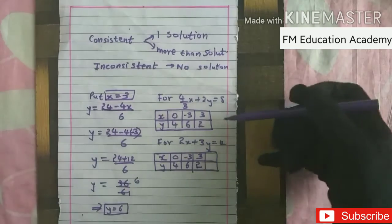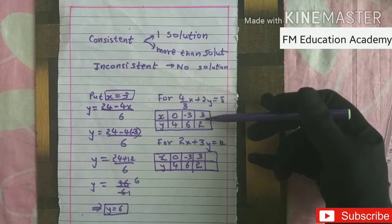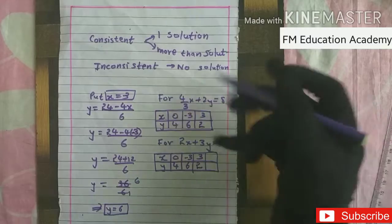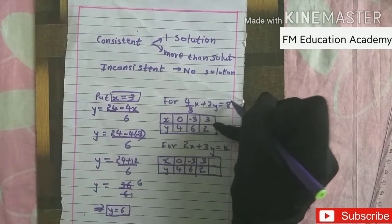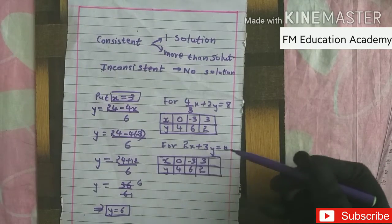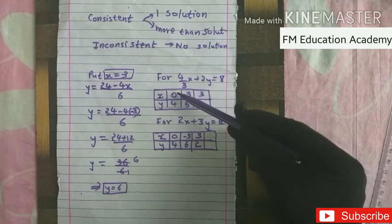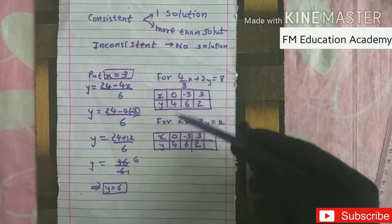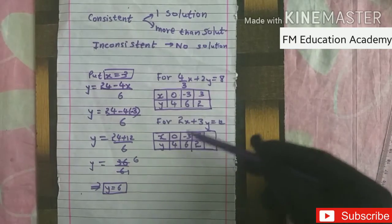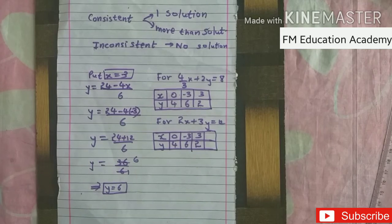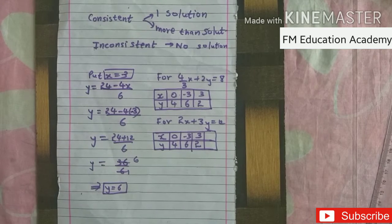The table of points (0, 4), (−3, 6), and (3, 2) is the same for both equations. This confirms the two lines overlap each other, which is expected since they have infinitely many solutions — overlapping lines.